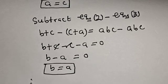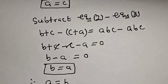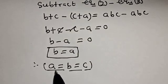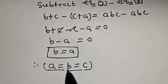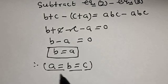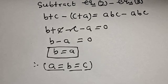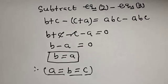Therefore a is equal to b is equal to c. Since a equals b equals c, let's solve for a using equation one.